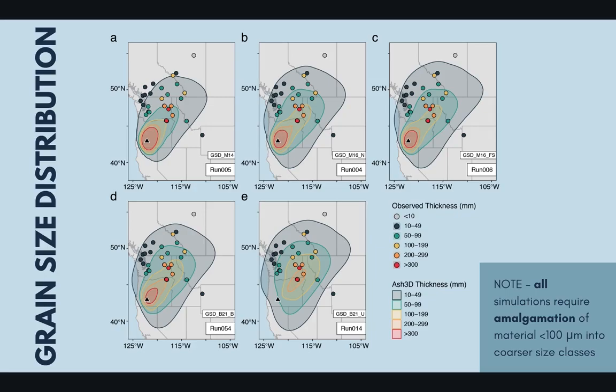However, there is a big simplification in all of these model runs, which is that we artificially aggregate everything finer than 100 microns into coarser size classes. That's because if we don't do this, the model never predicts that that ash will fall out within the model domain, since it uses Stokes settling to determine where ash falls out. But we know that Stokes settling isn't what drives the deposition of fine material — it's much more complicated. This is a problem that exists across many advection-diffusion models and really requires further study to accurately model where we see deposition.